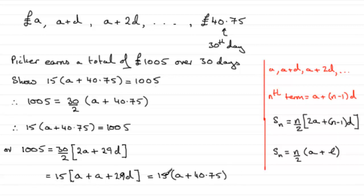So 1005 equals this. Just need to tidy it up so we can squeeze it in here that 15 multiplied by A plus 40.75 equals the 1005.